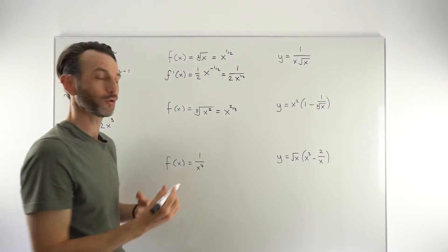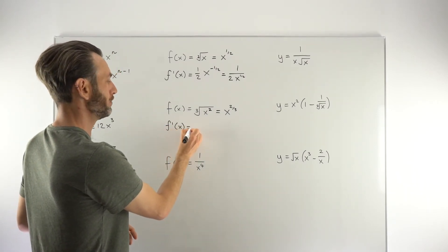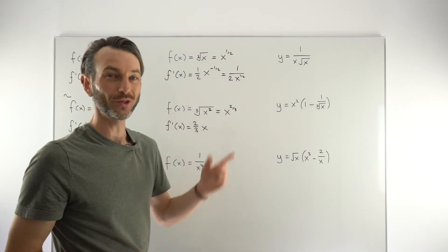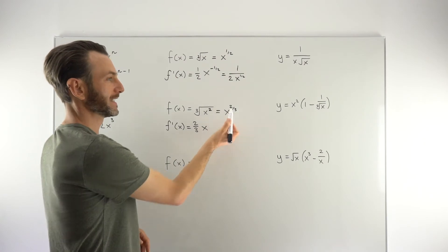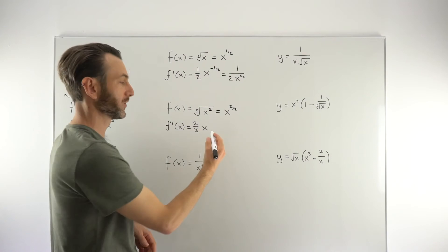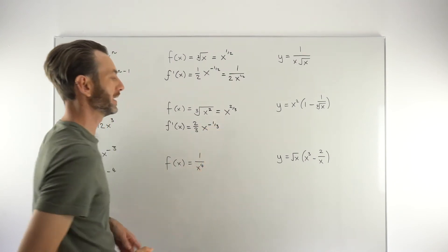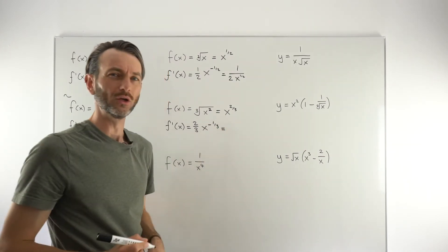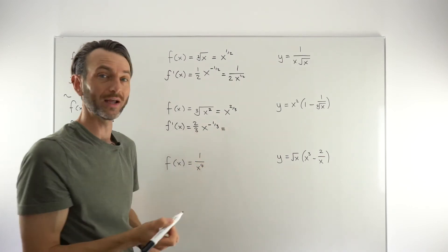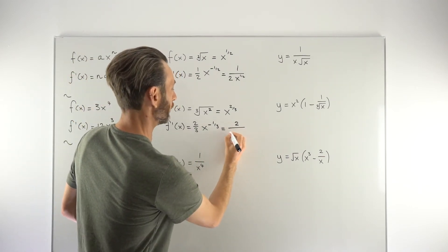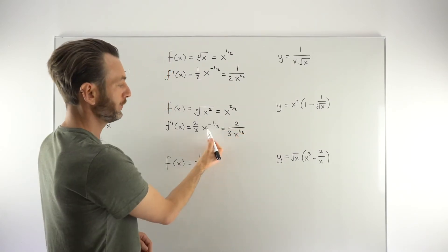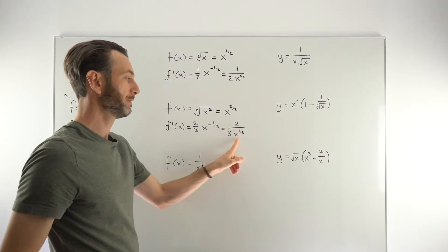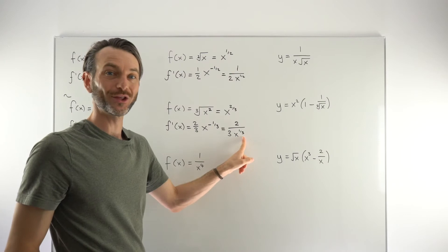Now this is in the correct format to use the power rule. F prime of X: multiply by the power, so two-thirds comes in front, X stays as X. Taking one off of two-thirds — think of that one as three over three — so two-thirds minus three-thirds is negative one-third. You could rewrite this with a positive power: two over three X to the positive one-third.